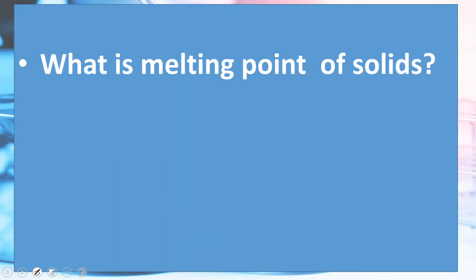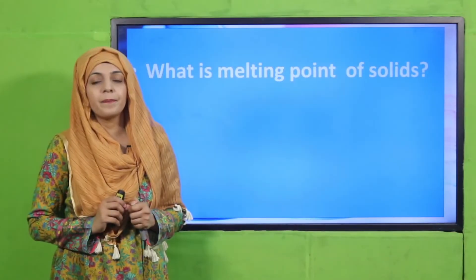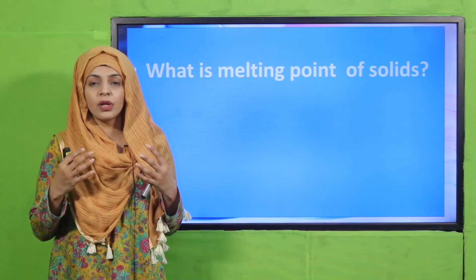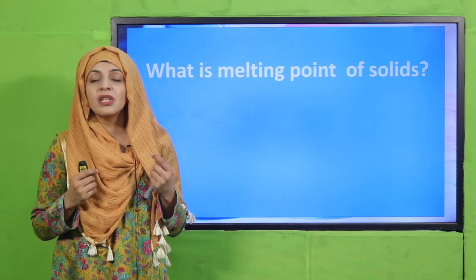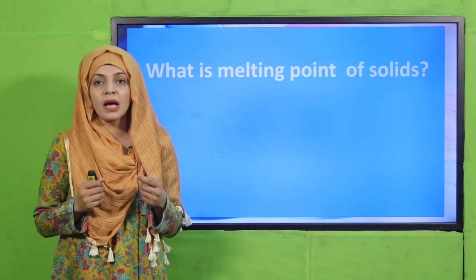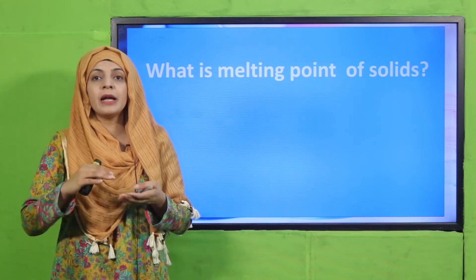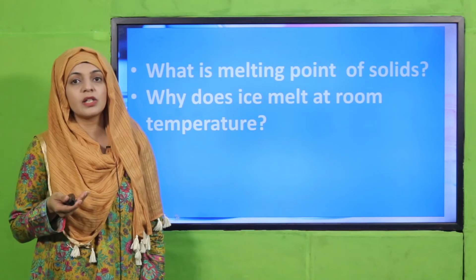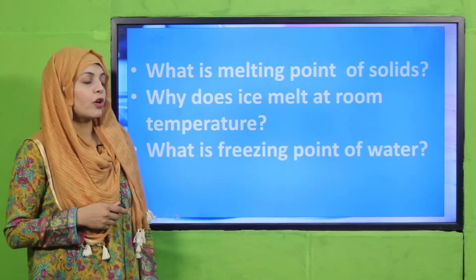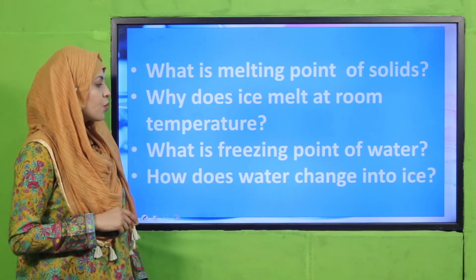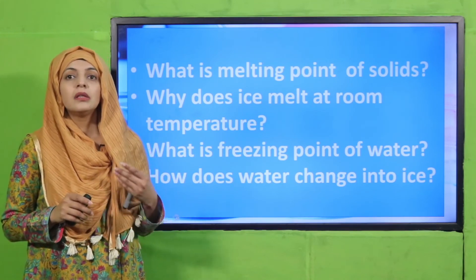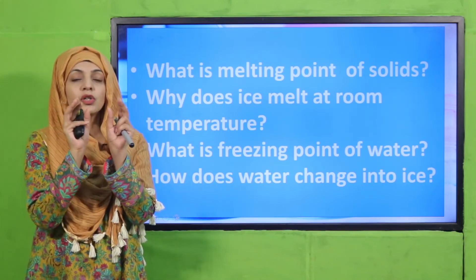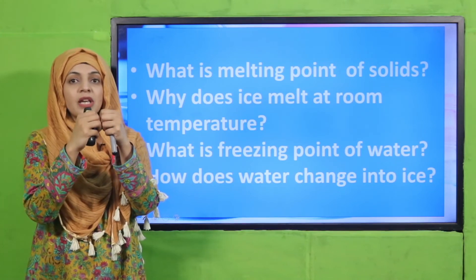Now is the time for evaluation. What is the melting point of solids? The melting point of solids is the temperature above zero degrees centigrade at which the particles start to move fast, gain energy, slide past each other, and turn into liquid water. Why does ice melt at room temperature? Because the temperature is above zero degrees centigrade — they gain energy and melt. What is the freezing point of water? Zero degrees. Below zero degrees, how does water change into ice? When the temperature is below zero degrees centigrade, the particles of water release energy, start to move slowly, come together, and then freeze and solidify into ice.